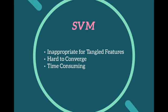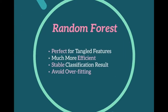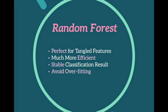We then moved to SVM but discarded it because it is inappropriate for tangled features — features that are mutually correlated and cannot be completely separated. SVM is also hard to converge and consumes a lot of time to run. We finally chose Random Forest because it handles tangled features well, is more efficient than ANN and SVM, produces stable classification results across multiple runs, and avoids overfitting.